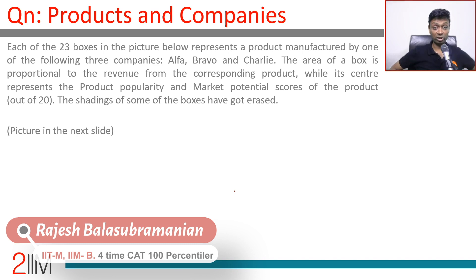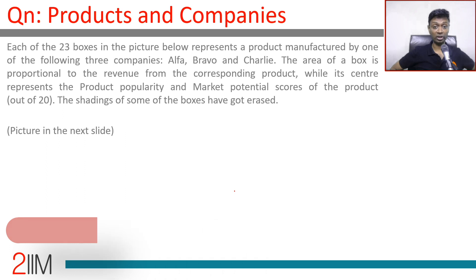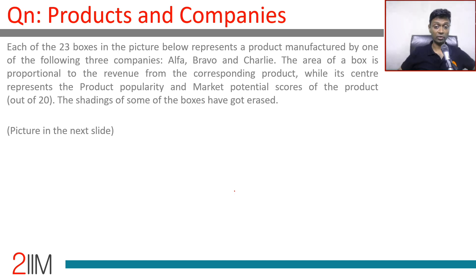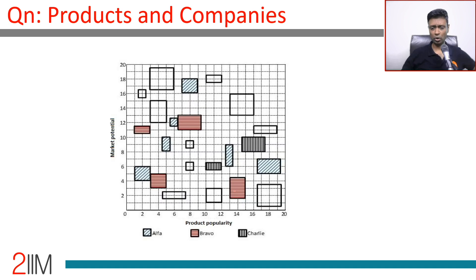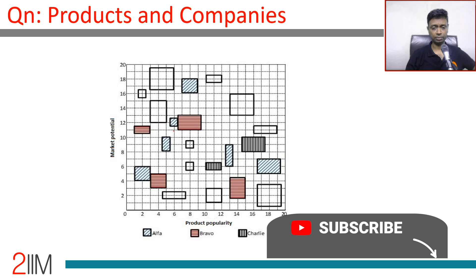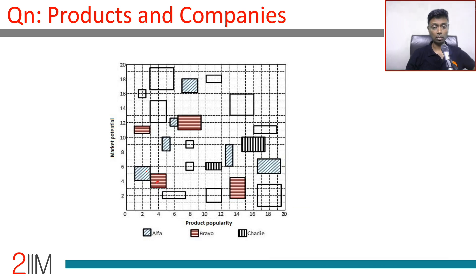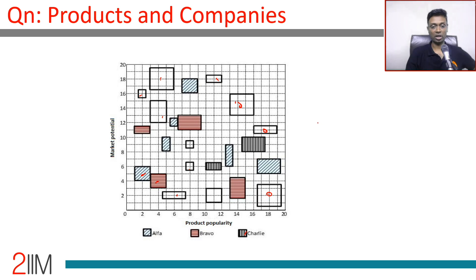Each of the 23 boxes in the picture below represents a product manufactured by one of the following three companies: Alpha, Bravo, and Charlie. The area of a box is proportional to the revenue from the corresponding product, while its center represents the product popularity and market potential scores. The shadings of some boxes have been erased, so we have about ten boxes unmarked — we don't know which company's product they belong to.